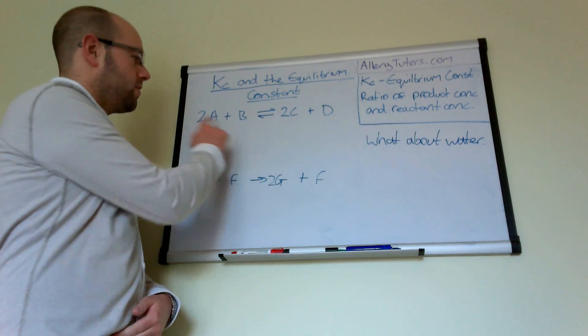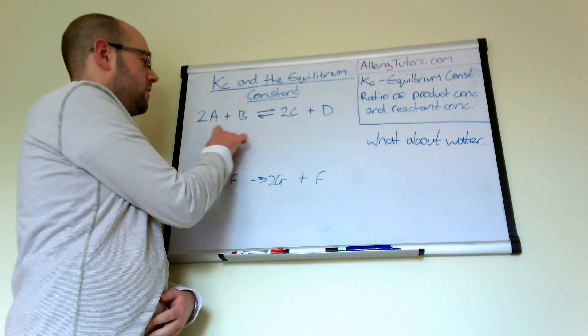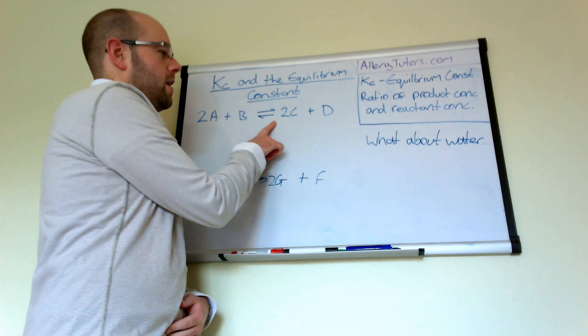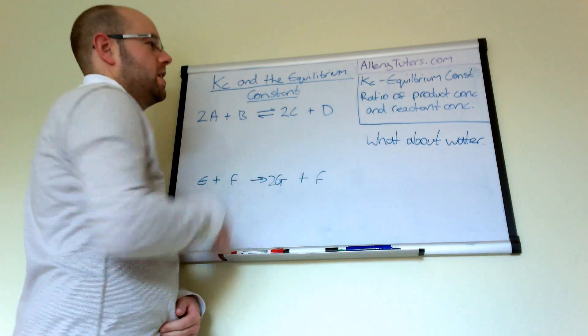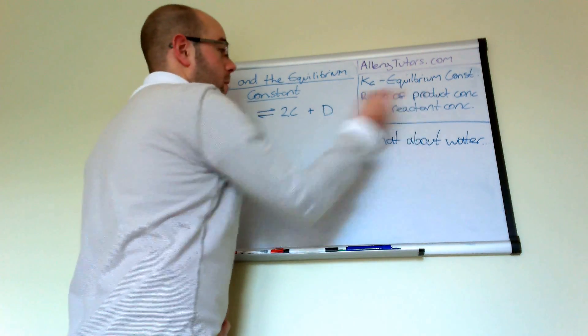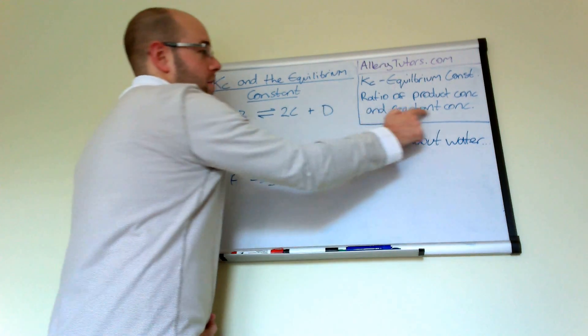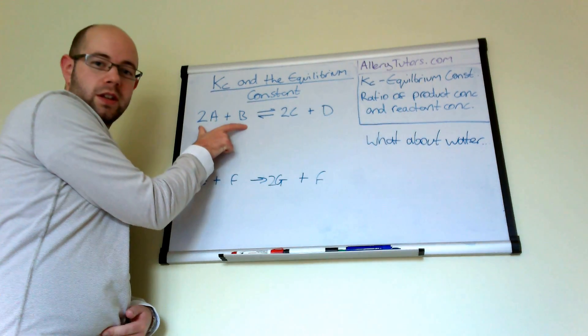So we're going to start with this generic example up here. So this is 2A plus B will give 2C and D. Now the equilibrium constant which is KC is basically the ratio of product concentration which is this lot over here and reactant concentration which is this lot over here.